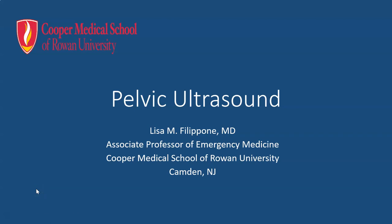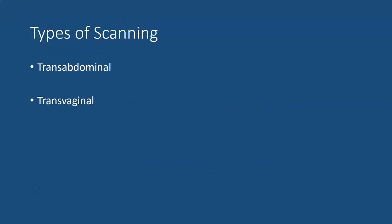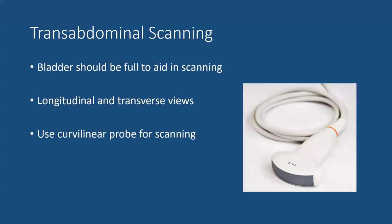Welcome to pelvic ultrasound. In performing pelvic ultrasound we'll be using two types of scanning: transabdominal and transvaginal. For transabdominal scanning, the bladder should be full. We'll be obtaining long and transverse views of the organs of interest, and we'll use the curvilinear probe which has a nice big footprint.